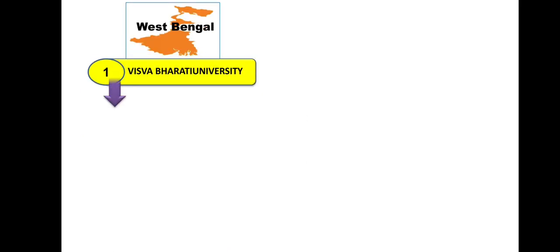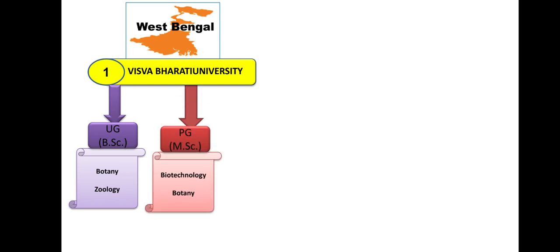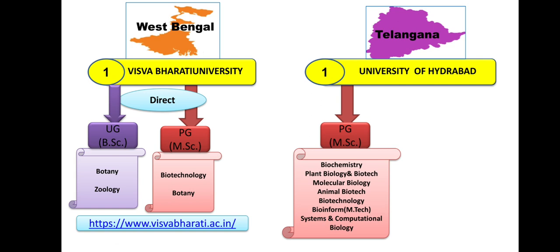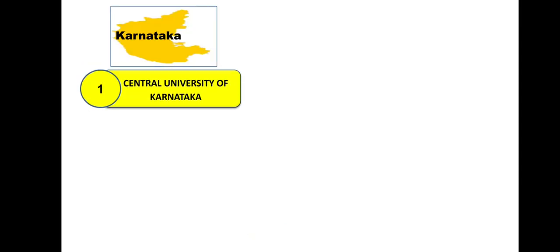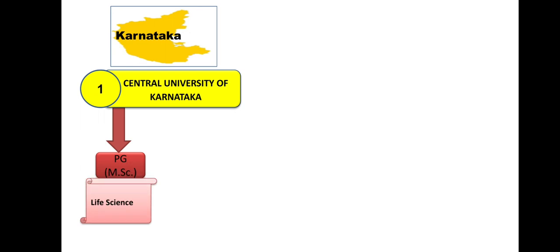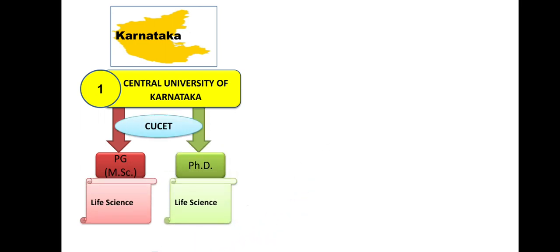West Bengal — Visva-Bharati University: BSc in Botany and Zoology; MSc in Biotechnology and Botany. Admission is direct. Telangana — University of Hyderabad: MSc list is quite long — Biochemistry, Plant Biology and Biotechnology, Molecular Biology, Animal Biotechnology, Biotechnology, Bioinformatics (MTech), and System and Computational Biology. PhD in Biochemistry, Plant Science, and Biotechnology. Admission through CUCET. Central University of Karnataka: PG in Life Science and PhD in Life Science. Admission through CUCET.